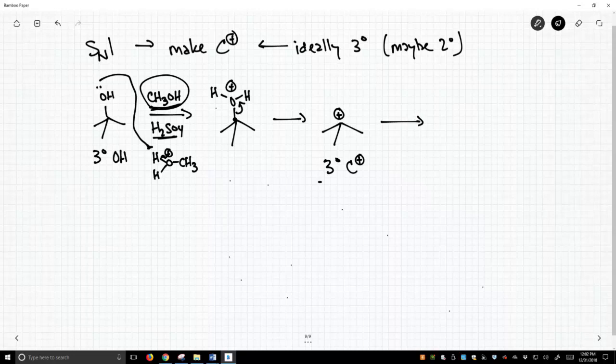The carbocation is a strong electrophile, and that's a perfect match for our weak nucleophile, methanol. Methanol can come in and attack. We form this species, and now we're one step away from forming our ether.